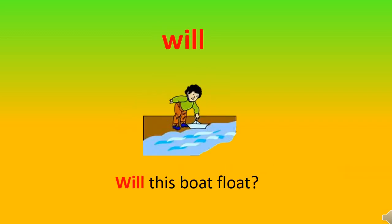The word is 'will.' Children, I hope you are repeating after me. We use 'will' when it is for a future context — future context means something we are not going to do right now but after some period of time. For example, the child has a boat but hasn't started it floating yet, so we say: Will this boat float?